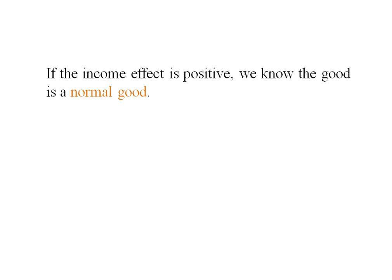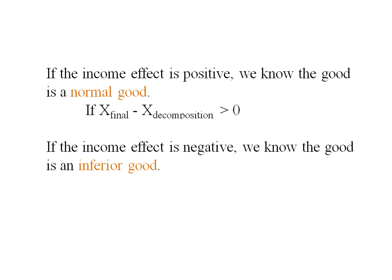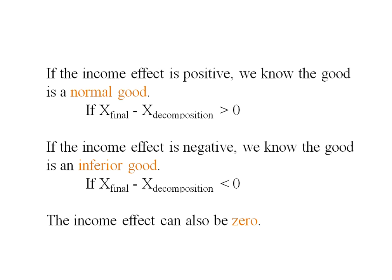If the income effect is positive, the good is a normal good — that's the case we were looking at here, where the final bundle minus the decomposition bundle was a positive number. If you get a negative number, that means you have an inferior good: the quantity of X in your final bundle minus the X in your decomposition bundle is negative. You could also have an income effect that equals zero.